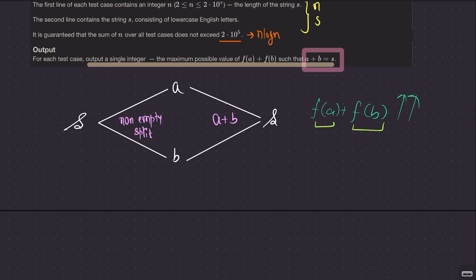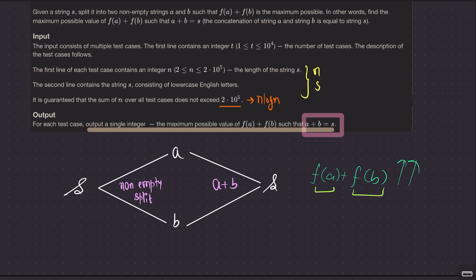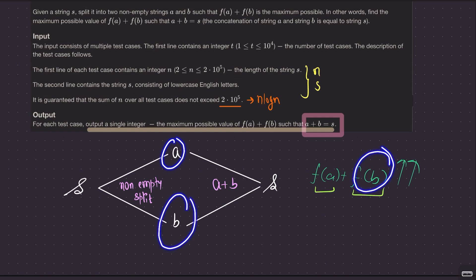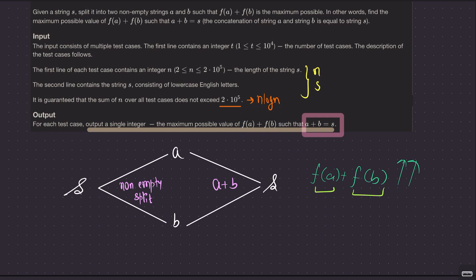So we want to maximize f(a) plus f(b) — that is, the sum of the number of unique characters in a and the number of unique characters in b. Input is pretty simple: the string s and its length. For each test case we print the maximum possible value of f(a) plus f(b). The constraint is that n over all test cases does not exceed 2×10^5, which hints you can go as far as n log n.